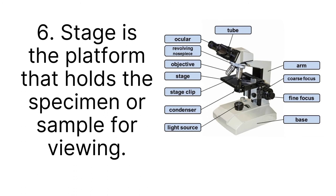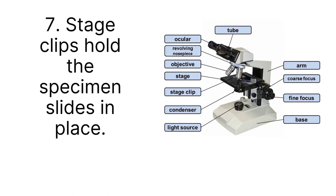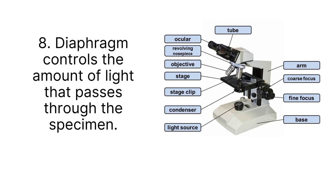Stage. This is the platform where the specimen or sample is placed for viewing. Stage clip. This is on top of the stage which holds the specimen slides so it doesn't move while you're viewing. Diaphragm. This controls the entry of light to a specimen. It regulates the amount of light that passes through the specimen.